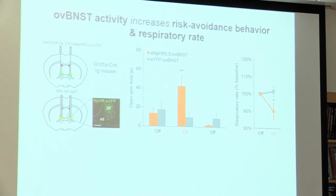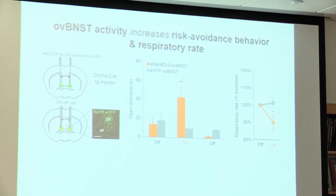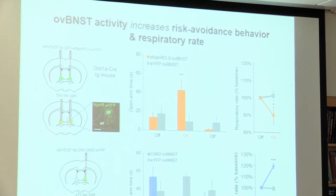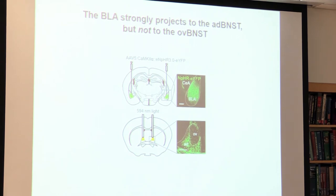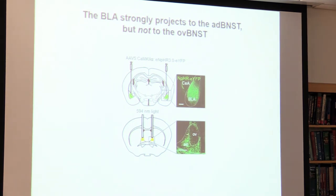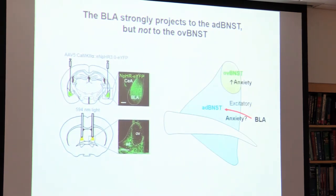Indeed, we expressed halorhodopsin in the oval BNST using a dopamine receptor Cre driver line, and inhibiting the oval BNST produced an anxiolytic effect in terms of both risk avoidance behavior and respiratory rate. The opposite manipulation with channelrhodopsin increased risk avoidance behavior and respiratory rate. Next, we targeted the BLA projections to the BNST and found that BLA fibers terminated in a region of the BNST that is not the oval BNST—which we defined as the anterior dorsal BNST, or ADBNST. Previous anatomy studies had already shown that the BLA does not project to the oval BNST.